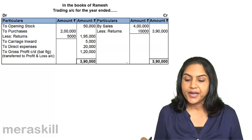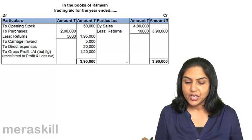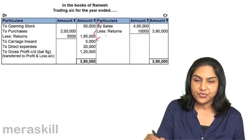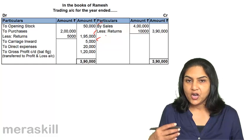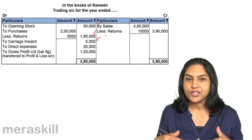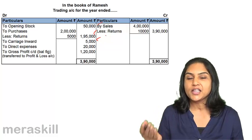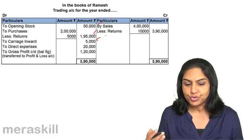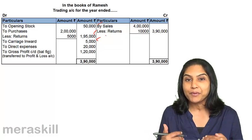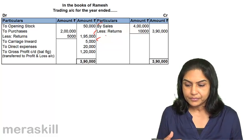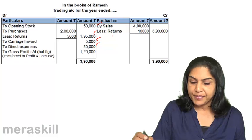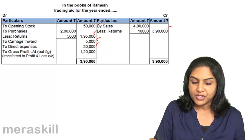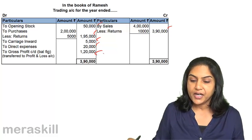Books of Ramesh — trading account for the year ended. Opening stock: 50,000. Purchases less return: 1,95,000. Carriage inward is the cost of carriage in bringing goods in, so it is a direct cost and goes to the trading account. Direct expenses are also included here. Sales less return: 3,90,000. This gives us a gross profit — the balancing figure — transferred to the profit and loss account.